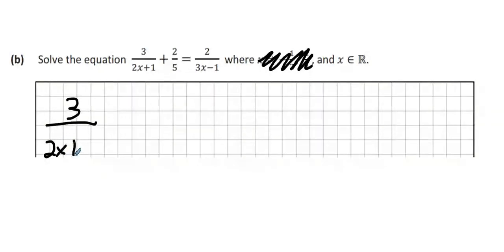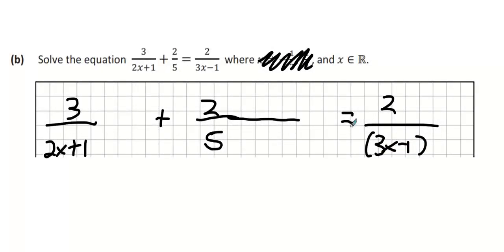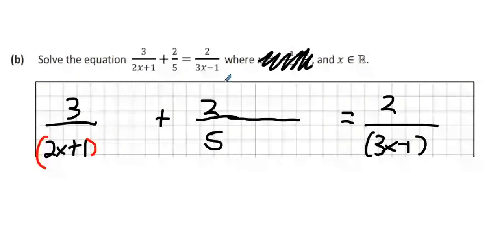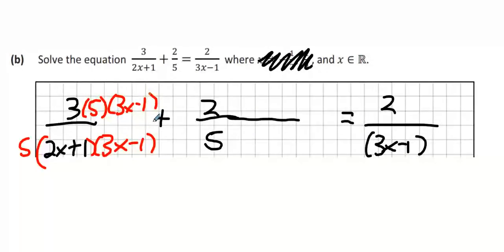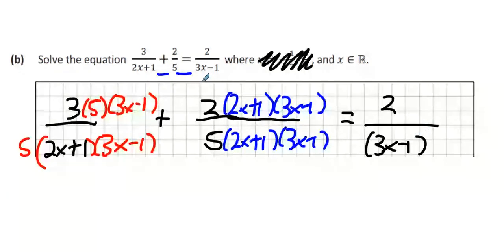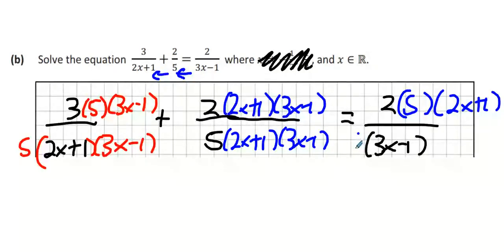So what we're going to do is give this whole system a common denominator, which will be the first thing to do. And this is a fairly standard question. So the 2x plus 1 looks across and it sees a 5 and a 3x minus 1. Whatever you do to the bottom, you must do to the top to maintain the fraction's value. The 5 looks to the left and right and it sees a 2x plus 1 and a 3x minus 1. And then finally, the 3x minus 1 looks to the left and it sees the 5 and the 2x plus 1. And what we can see now is that the denominators are all the same.